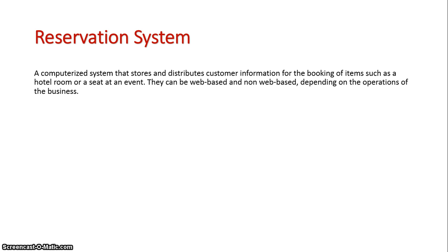Scenarios where a reservation system may be used include booking a hotel room. A customer rings and books a hotel room — they are slotted into a specific room and that room is theirs. That way, when it's done in real time, another customer doesn't ring five minutes later and get booked into the same room. The system needs to do the booking straight away.